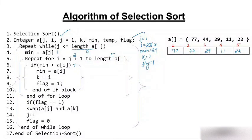We increment i to 4. Is minimum (29) greater than a[4] (77)? No — 29 is not greater than 77. We don't move inside the if block. We increment i to 5. Is minimum (29) greater than a[5] (22)? Yes — 29 is greater than 22. So minimum becomes 22, k = 5, flag = 1.